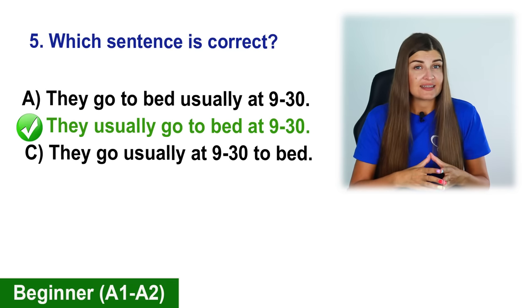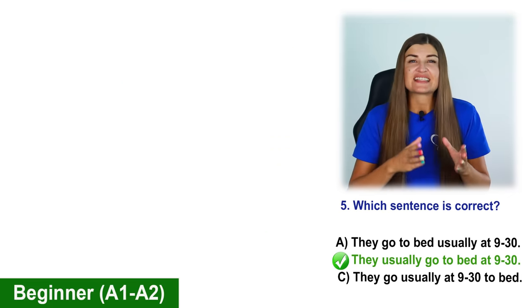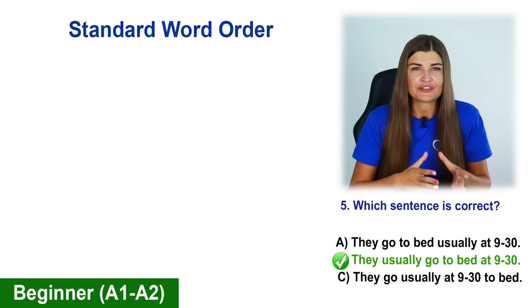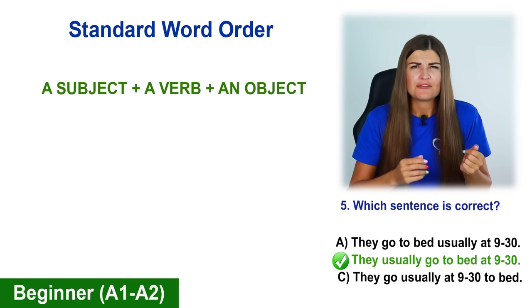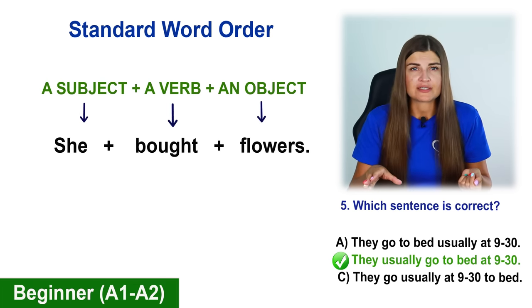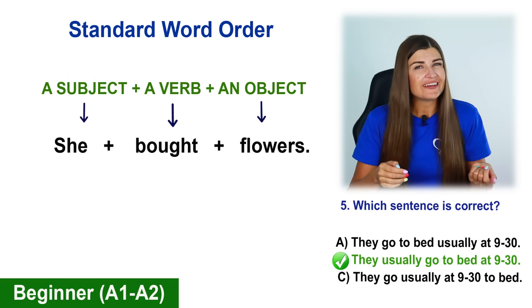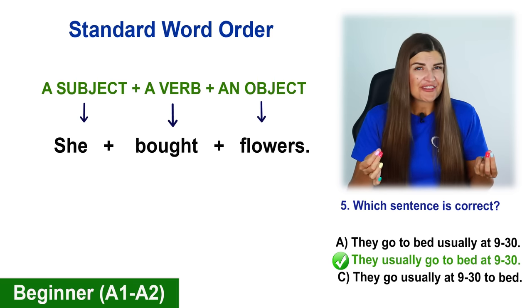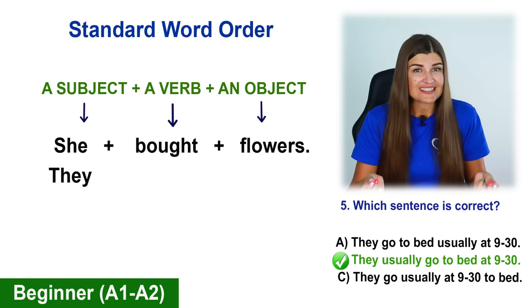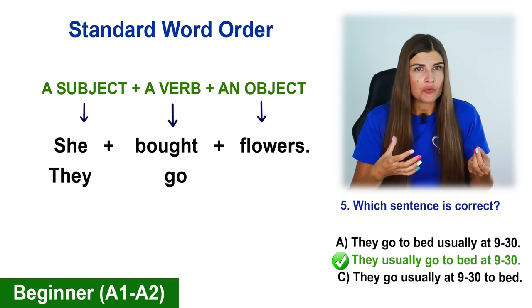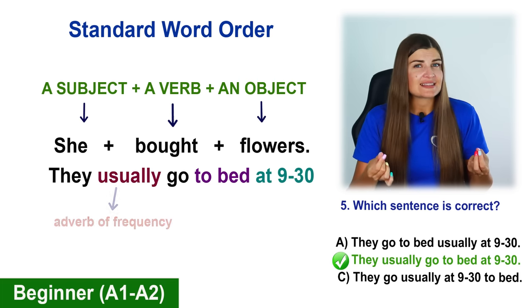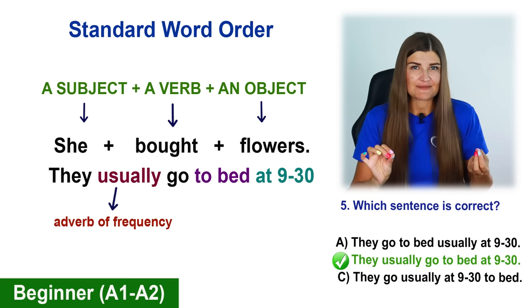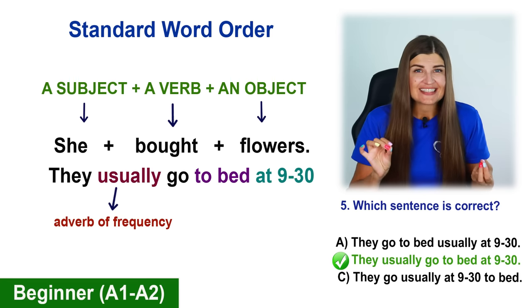The correct sentence is option B: They usually go to bed at 9.30. In English, the standard word order for a sentence is subject plus verb plus object. For example, she bought flowers. Here we have: subject — they, then the verb — go. But the word usually is an adverb of frequency and it generally stands before the main verb in a sentence.